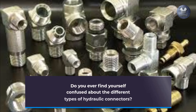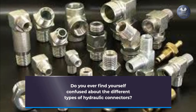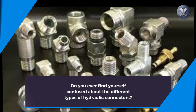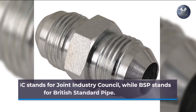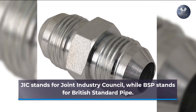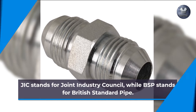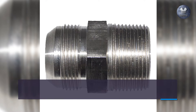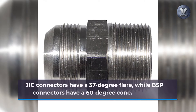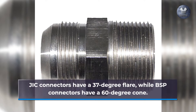Do you ever find yourself confused about the different types of hydraulic connectors? JIC stands for Joint Industry Council, while BSP stands for British Standard Pipe. JIC connectors have a 37-degree flare, while BSP connectors have a 60-degree cone.